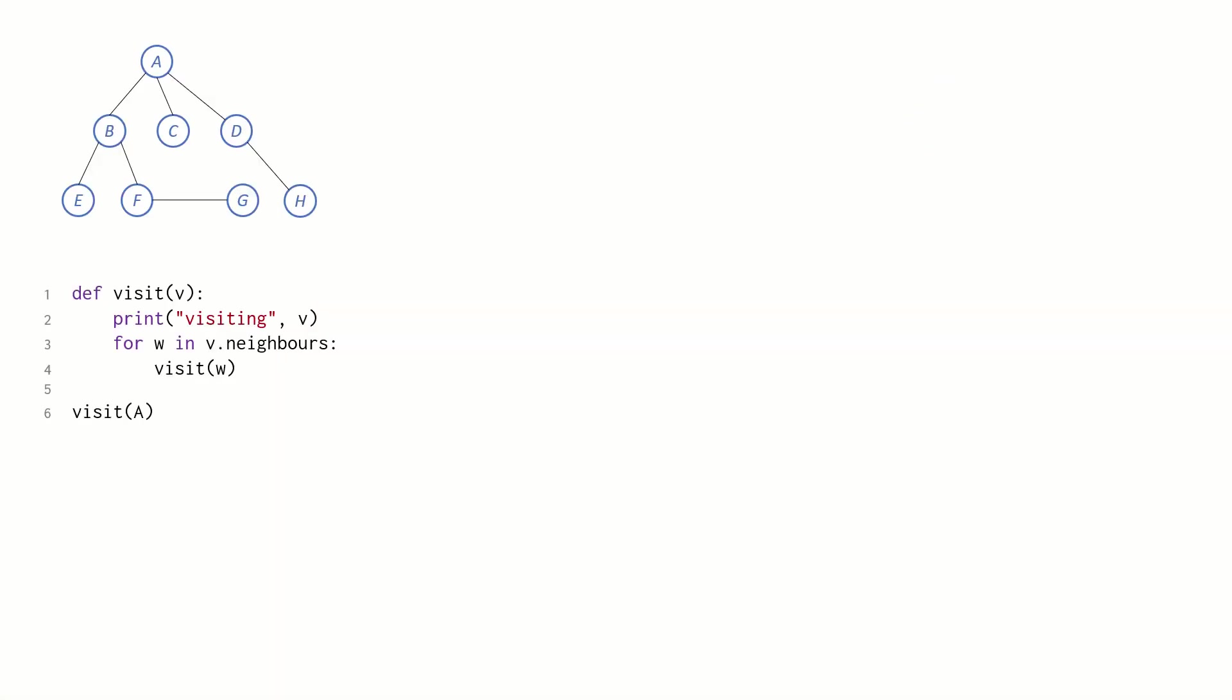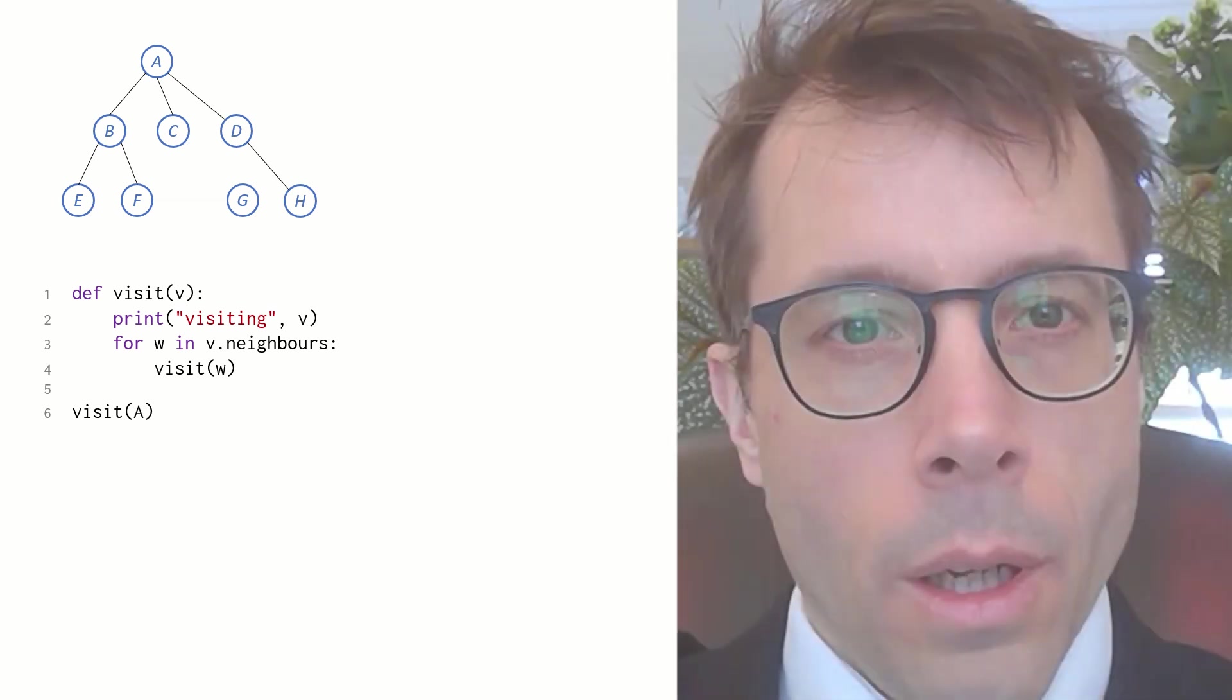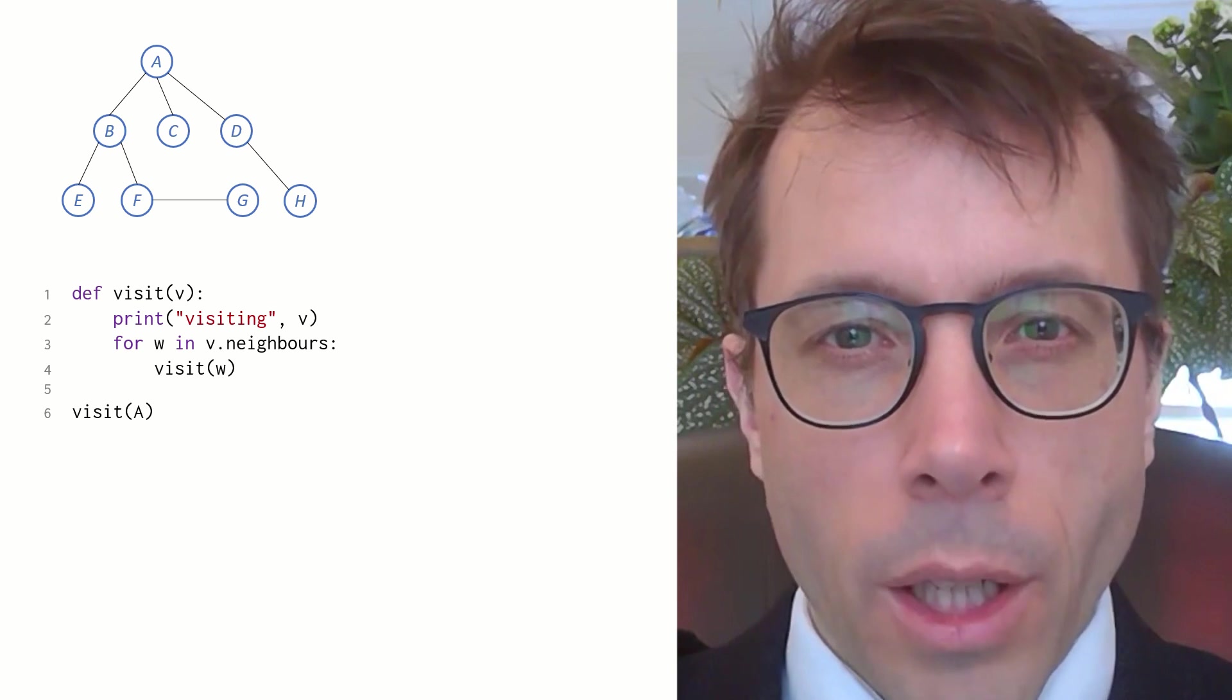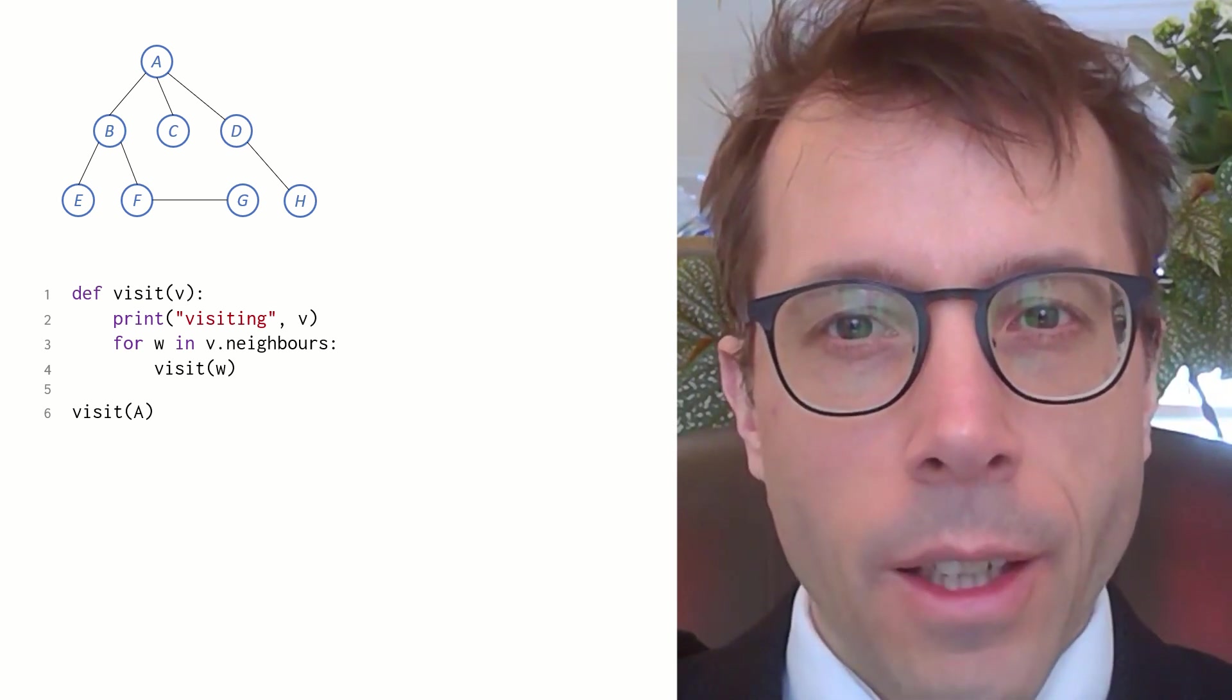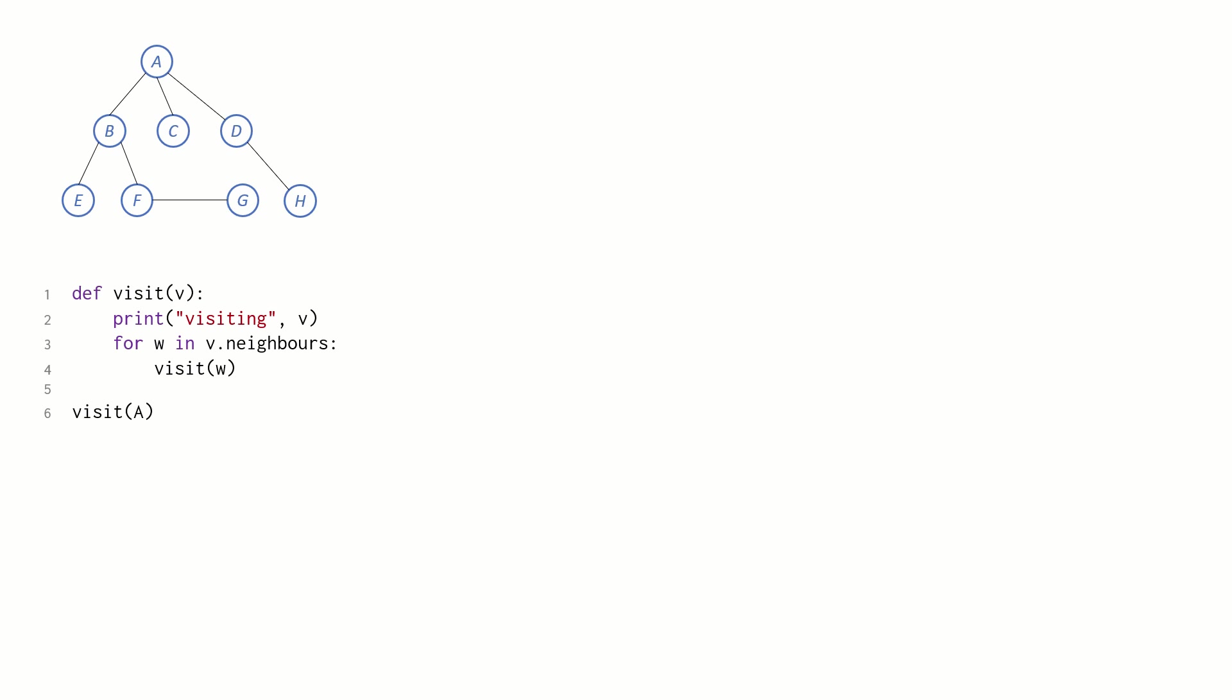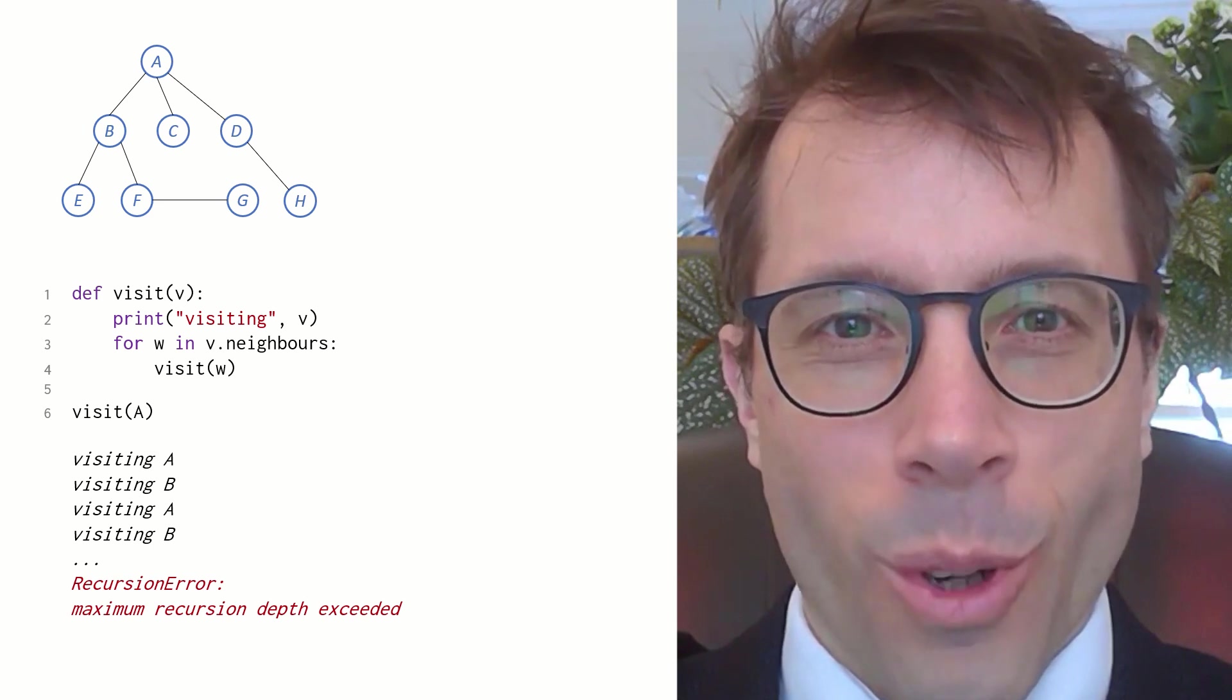Here's the first thing we might do if our graph was a tree. We might do just a simple recursion. Question. What would you expect the output of this code to be when we call visit A? Pause the video and work it out.